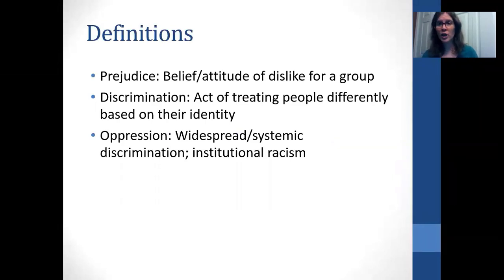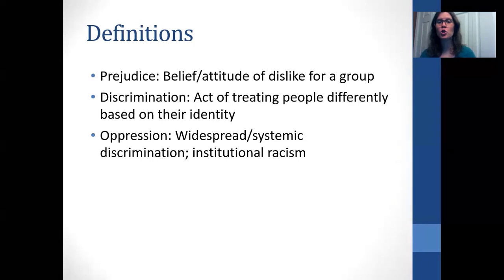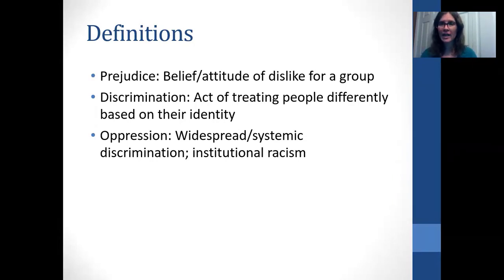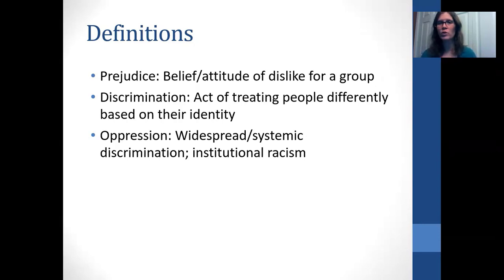When we think about the word prejudice, prejudice is having a belief or an attitude towards a certain group that is negative. Discrimination is when we act upon our prejudices — treating people differently because of their group identity. Oppression takes that a step further: it's widespread or systemic discrimination that leads to institutional racism or institutional differences, with vast disparities between groups because those discrimination ideas have become so ingrained in society. These are basic definitions to keep in mind as we walk through this week's material.